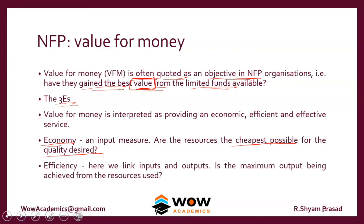Efficiency links the inputs and outputs — is the maximum output being achieved from the resource? Assume the hospital has been built to treat 100 patients. If you are treating 90 people, that is 90% efficiency. If you are treating 120 people, it is 120% efficiency. So we link the construction of the hospital with how many people we are treating.